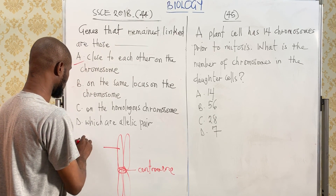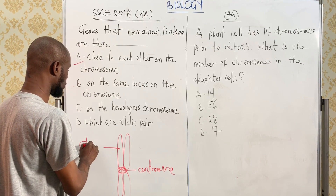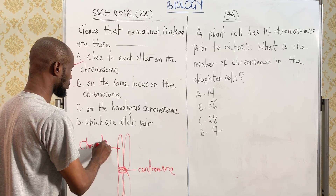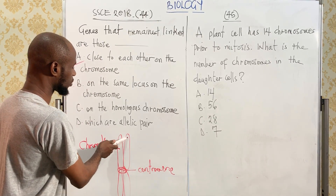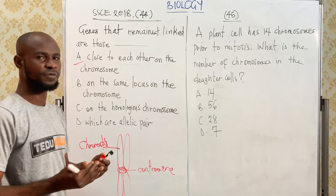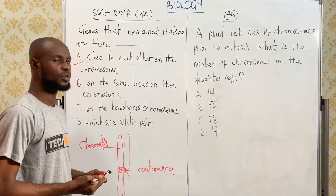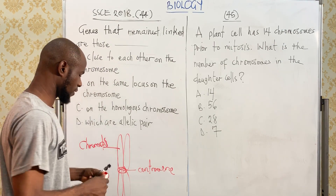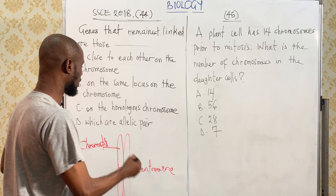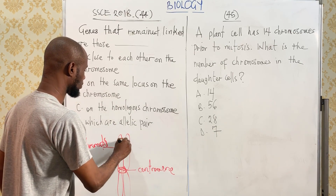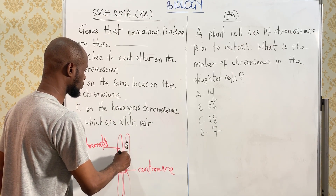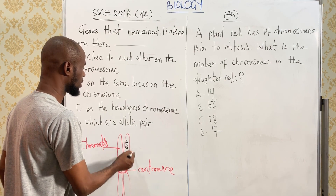So this is the chromatid — you have two chromatids. Genes are located on the chromosome, so let's identify each of the genes with letters. We have A, B, C, D, and E.